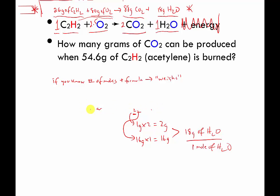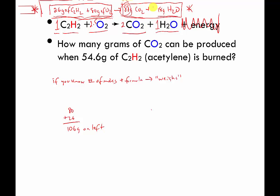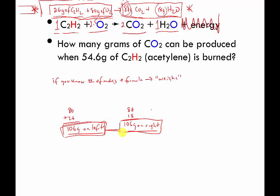Before we go on to the problem, I want to ask a question about the top equation: how much does everything on the left side of the arrow weigh together, and how much does everything on the right side weigh together? Everything on the left: 80 plus 26 grams — that's 106 grams on the left. 88 plus 18 grams — also 106 grams on the right. The reason they match is because the equation is balanced. We have not gained or lost any material. This is another crude test to see if you've balanced your equation correctly.